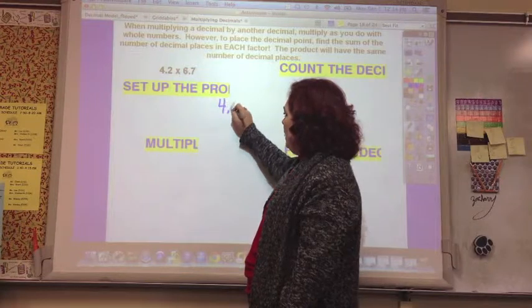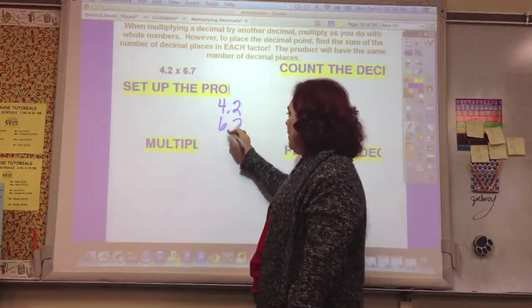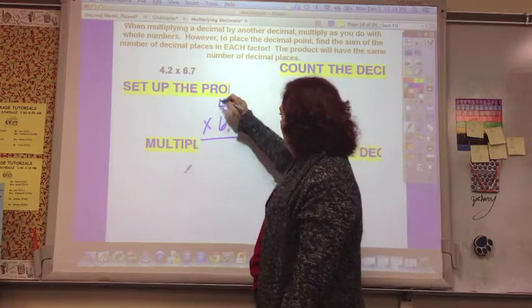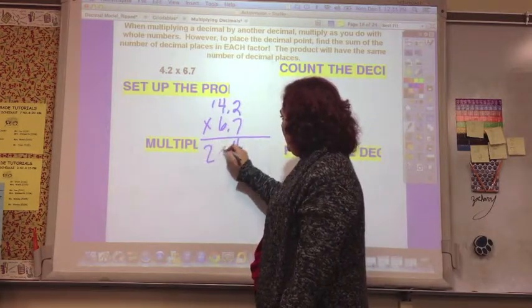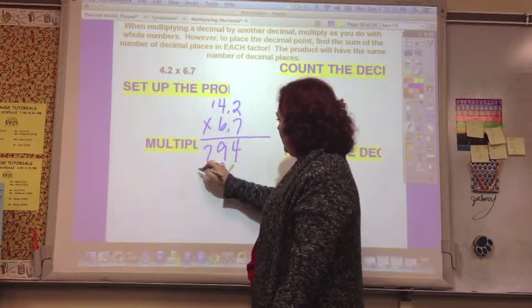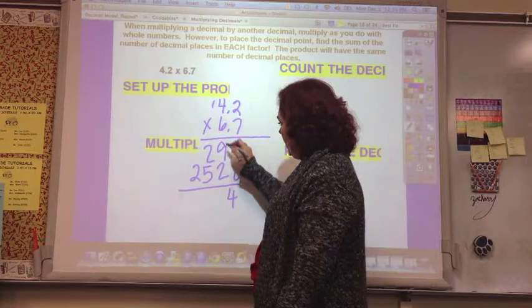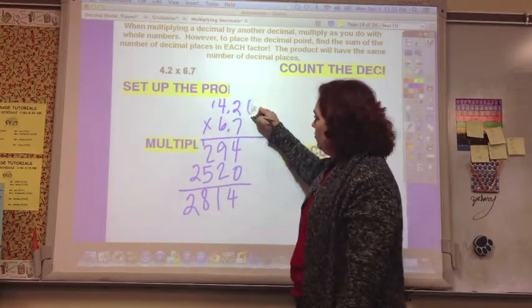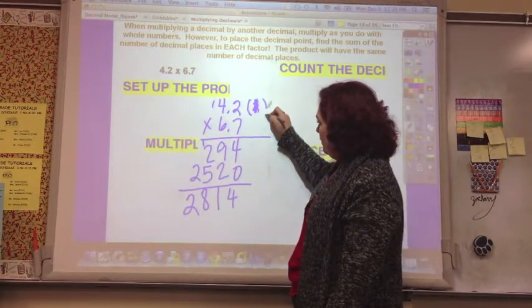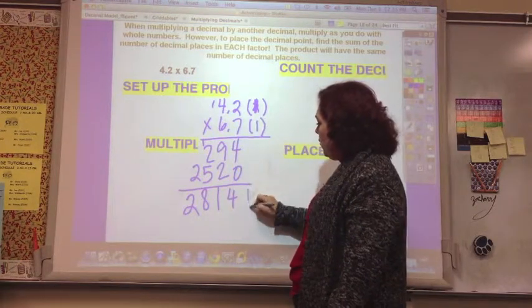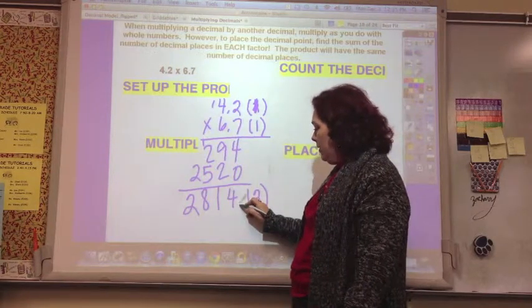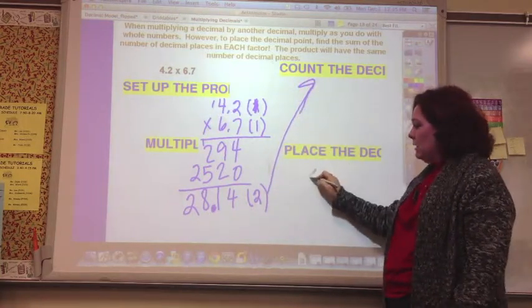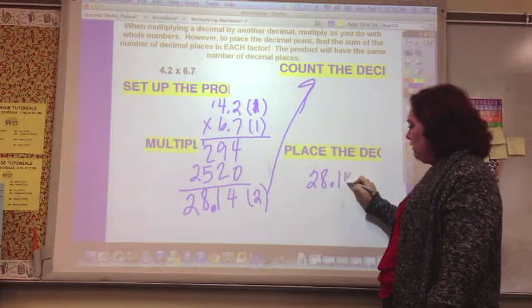Set up the problem. So it doesn't matter. These are both 2-digit times 2-digit, so it doesn't matter what goes on top. Set up the problem. Multiply just as I would a 2-digit times a 2-digit. So 14, 28, 29, 12, 24, 25, and then add up, just like I normally would. Now, I've got two places here. Oh, sorry, one place here and one place here. So that total is 2 places. So I need to move that decimal point 2 places. One, two. So that is counting the decimals, and then placing the decimal is putting it 2 places over.